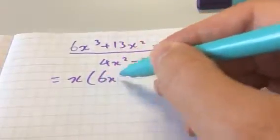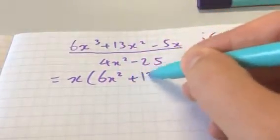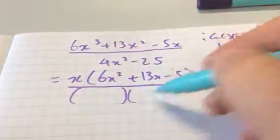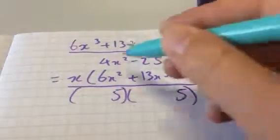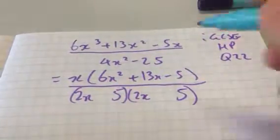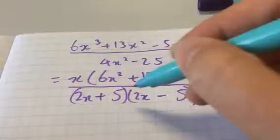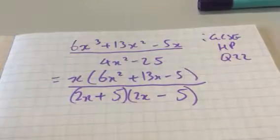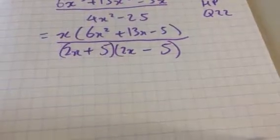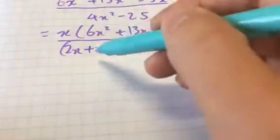I'm going to take out a common factor of x in the numerator and then notice that the denominator is the difference of two squares because 5 times 5 is 25 and 2x times 2x is 4x squared. If I change those signs, the middle x's would cancel. Then I'm going to try and factorize that and hope that one of those factors will be either that one or that one to simplify it.